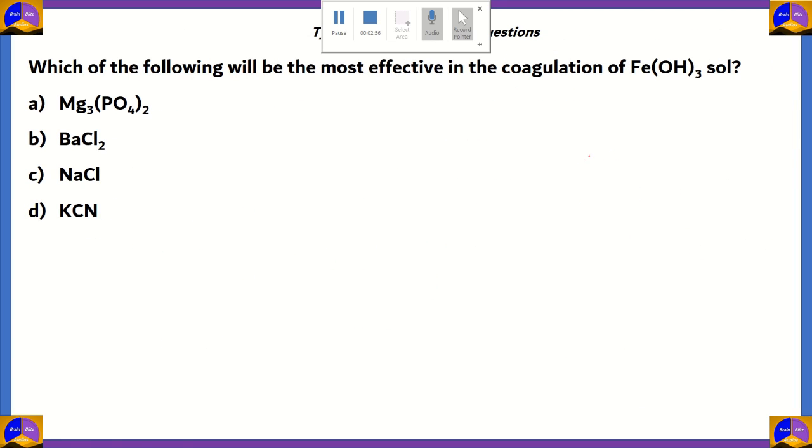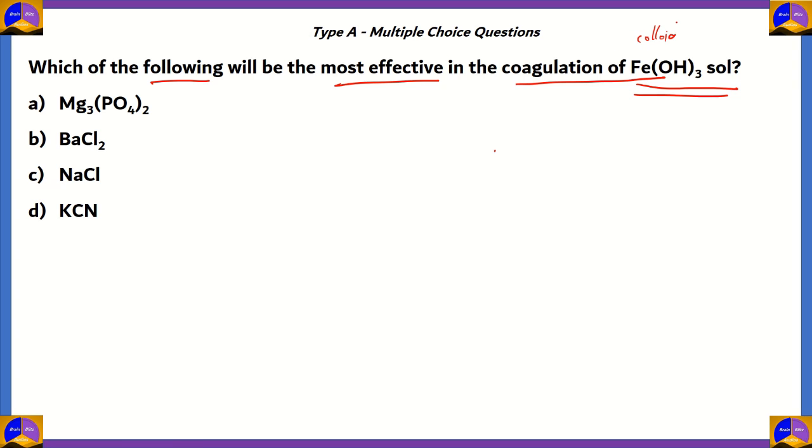Now, let's move on to another question. Which of the following will be the most effective in the coagulation of ferric hydroxide sol? So, basically, we're looking at ferric hydroxide as a colloid. So, sol, basically, is a colloid with solid and liquid phases.